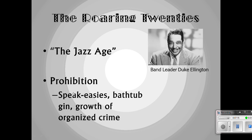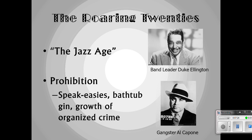Now, when you prohibit something as widespread as alcohol, you're going to have people who want to profit from that. This is gangster Al Capone, who you might be very aware of — he was heavily involved with the sale and distribution of illegal alcohol. Interestingly, however, when Al Capone finally did go to jail, it was not for breaking the laws of prohibition. He went to jail for income tax evasion. So the moral of that story is: even criminals have to pay their taxes.